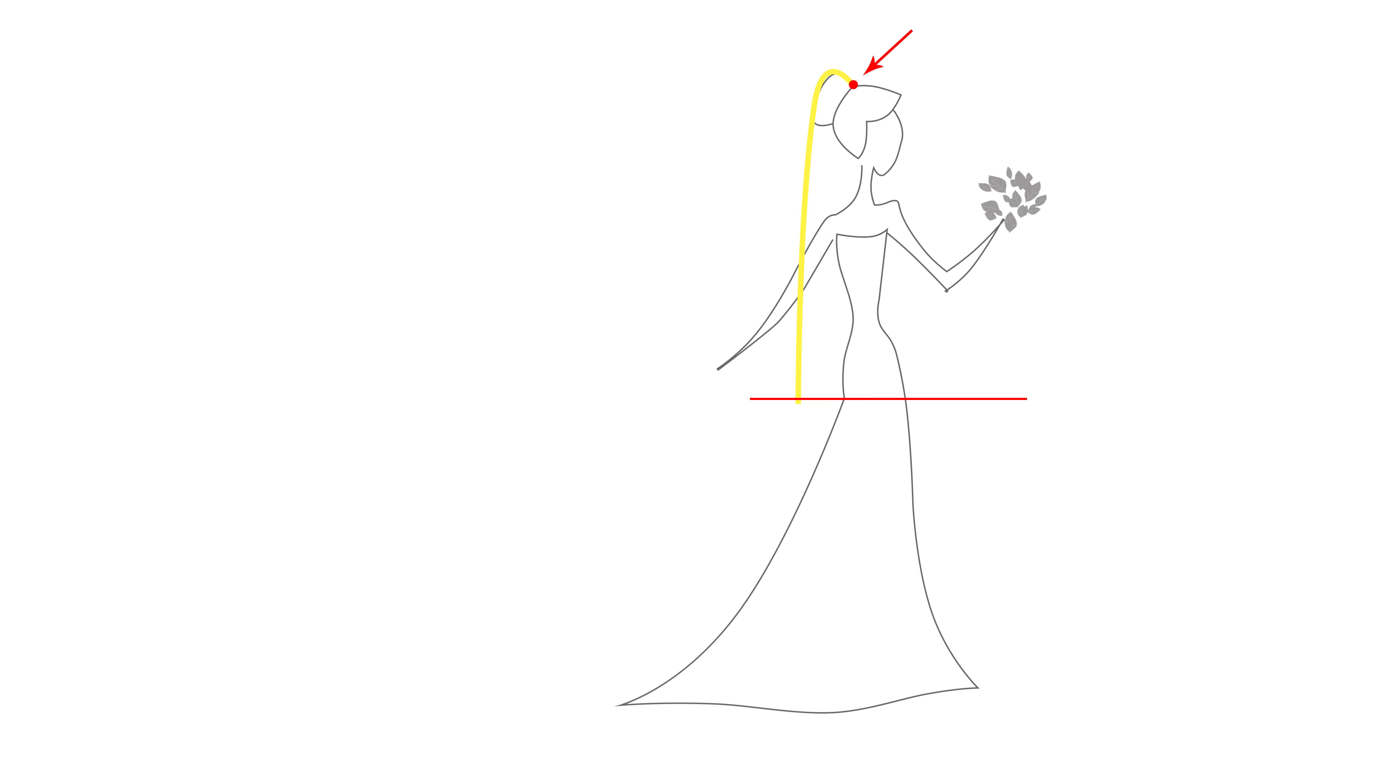Measure the length of the back layer from the attachment point of the veil on the head to the desired length, to the hip line, to the hemline of the dress skirt, or to the end of the train. Leave the measuring tape hanging freely down the back, just as the veil fabric will fall.